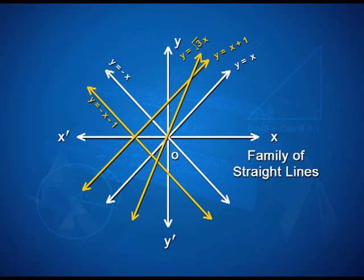Here you can see in the figure the family of straight lines. This line is y = x, this line is y = −x, and this is y = −x − 1, and so on.